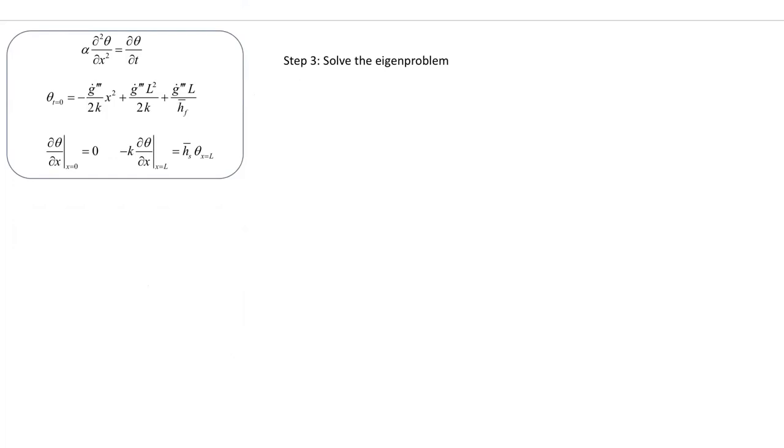So now we have to solve the eigen problem. This is the same solution or procedure we've been doing before, but let's go through it real quick. So we have first the X problem. D theta X, DX squared plus lambda squared theta X equals zero. That's what we're trying to solve now.